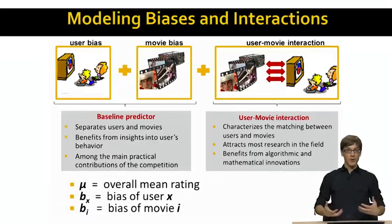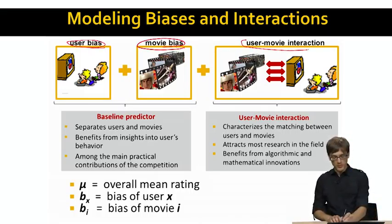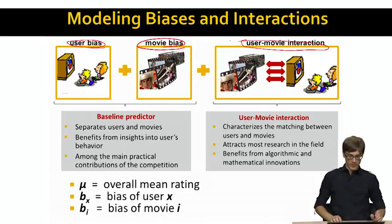The way we want to model both the biases and interactions is in this way. In some sense, we would want to model the user bias, the movie bias, and then we also want to model the user-movie interaction. And the way we can achieve this is very similar to what we already talked about.